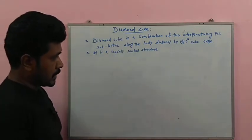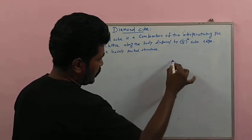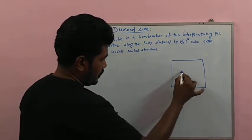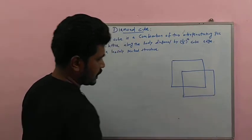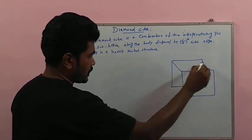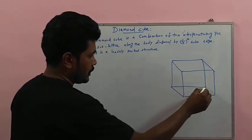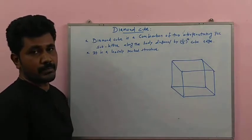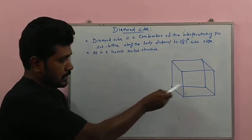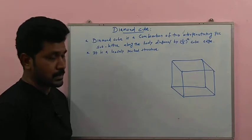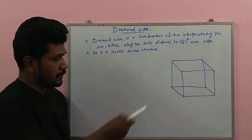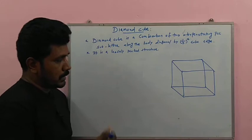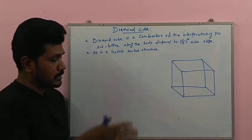The diamond structure consists of a cube with an outer cube joined at the edges. There are three different types of atoms in this structure: corner atoms (eight corners), face-center atoms (six faces), and four extra atoms inside the cube.